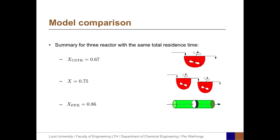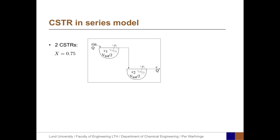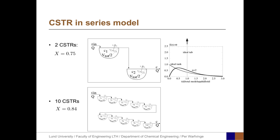We return to our model comparison showing that tanks in series falls between the CSTR and PFR. The question is: how many CSTRs in series are needed to approximate the PFR? The CSTR in series model is a very versatile method to describe non-ideal reactors. With two CSTRs in series we got a conversion of 0.75, and the residence time distribution falls between the exponential CSTR and the delta-function PFR. With 10 CSTRs in series we get a conversion of 0.84, and the residence time distribution is very much more similar to the PFR than to a single CSTR.